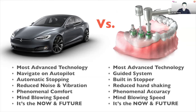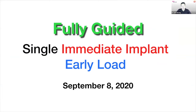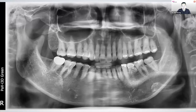Let me start with a simple case. The patient came in on September 8th — this is a fully guided single immediate implant and early load. On the lower left you could see the patient had a residual primary molar, and on the panoramic X-ray the distal root is broken.